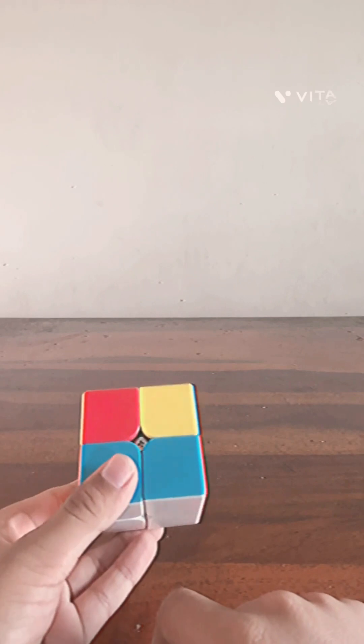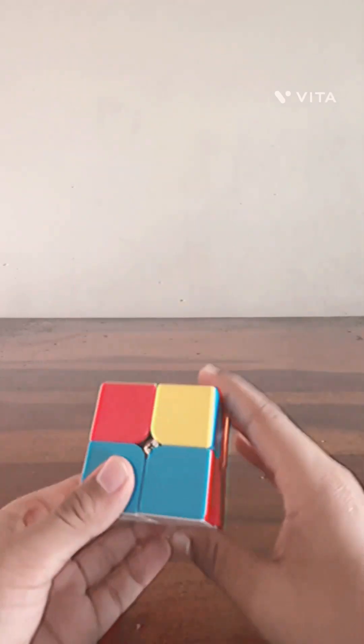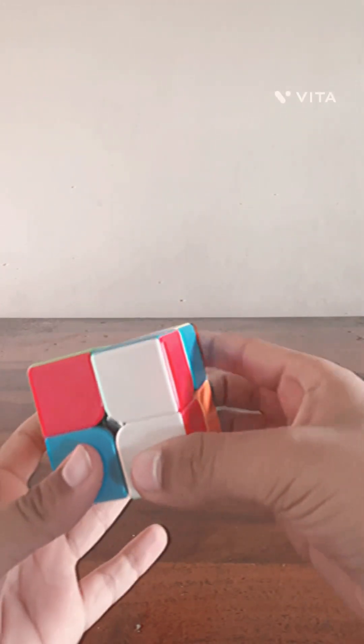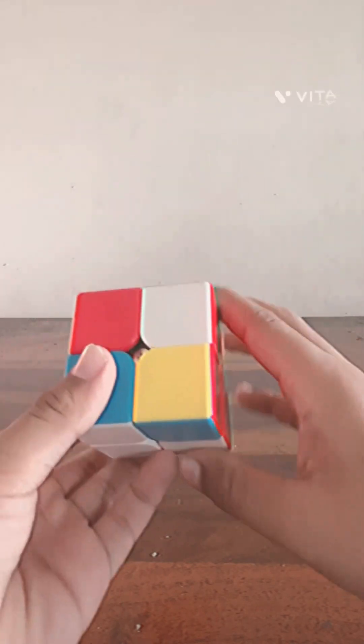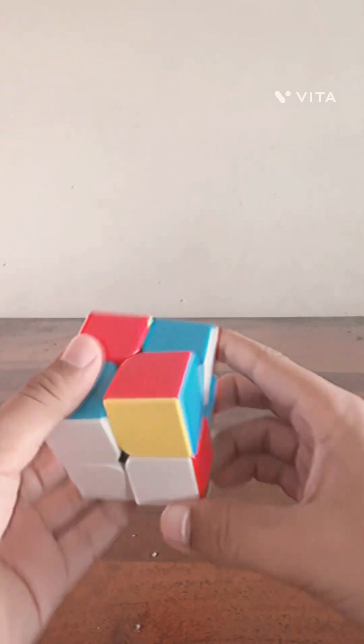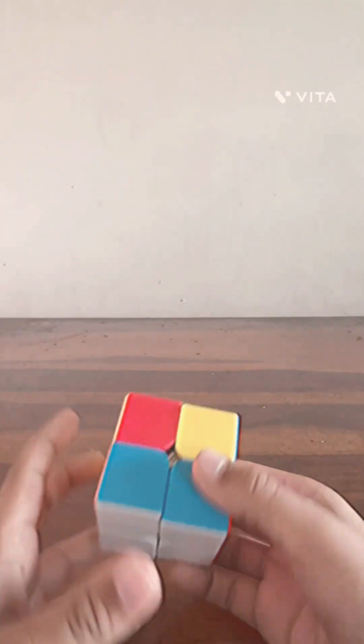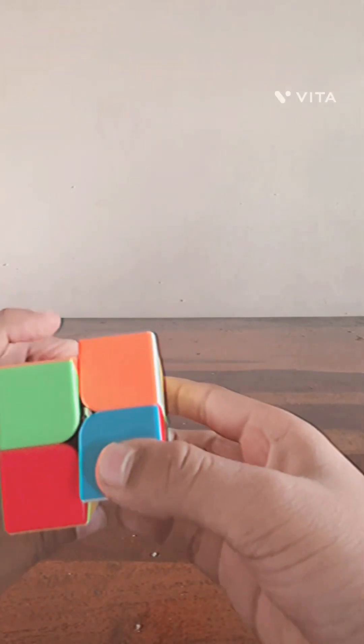So I will teach you first the algorithms. There are three algorithms needed. So first algorithm, take it up, then with this thumb like this, then down, then this thumb. Now repeat this until you get it fast and smooth. Now same with the left thumb: up this side, down this side.